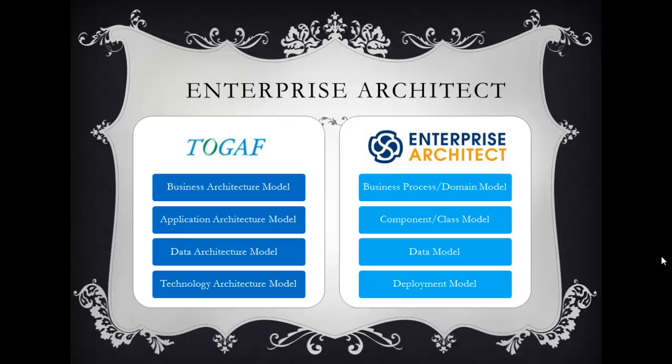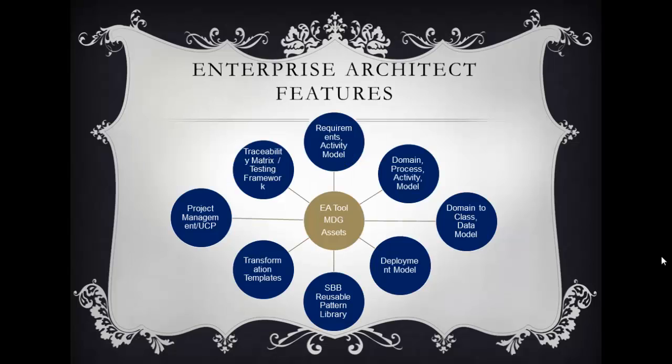Enterprise Architect provides business process and domain modeling with tools for business architecture models, application architecture models, component and class models, and data architecture models mapped to data models. Technology architecture models cover different targeted architecture models, so deployment models can help define those and your transition architectures.